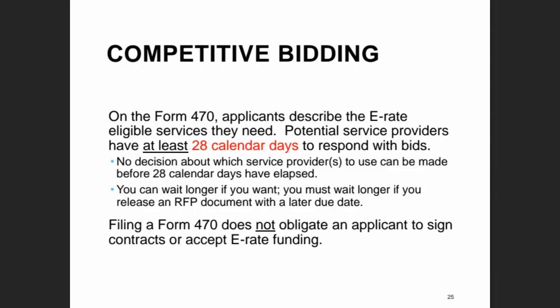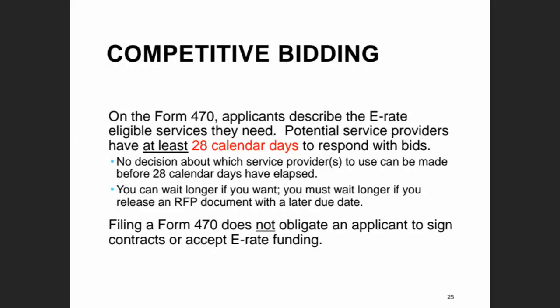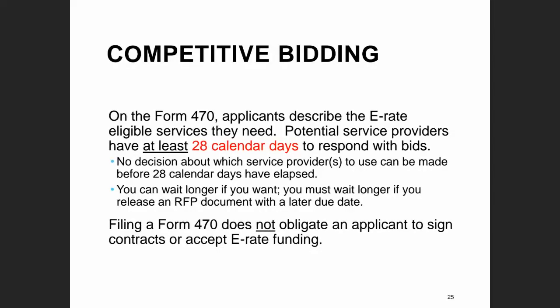This is the super important part — if you make a decision before the 28 calendar days have elapsed, that's a competitive bidding violation and you will not be funded. You have to wait until those days have elapsed to complete a bid evaluation and move forward with a contract. Now, there are cases where you can accept bids longer — if you haven't received all the bids you want to consider and haven't set a specific due date, you can continue accepting bids. Also note that filing a Form 470 and requesting bids does not obligate you to move forward with purchases for that project.